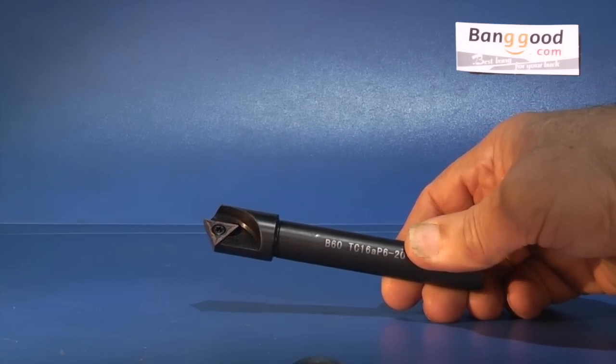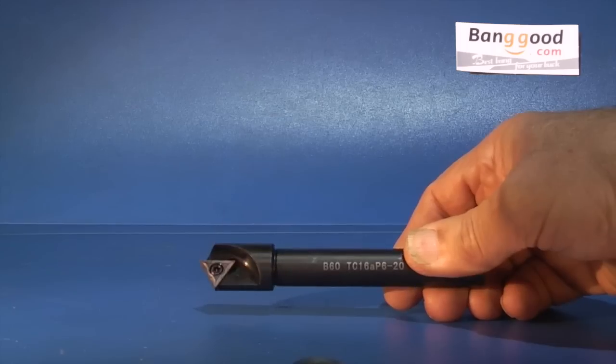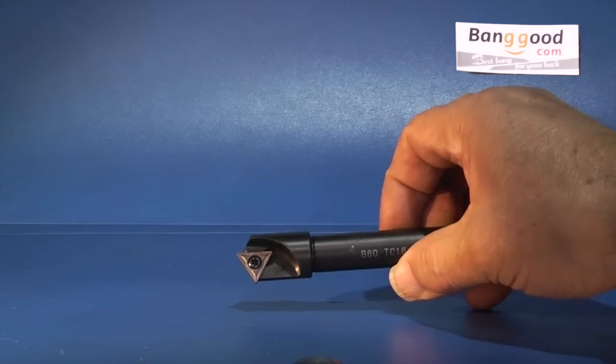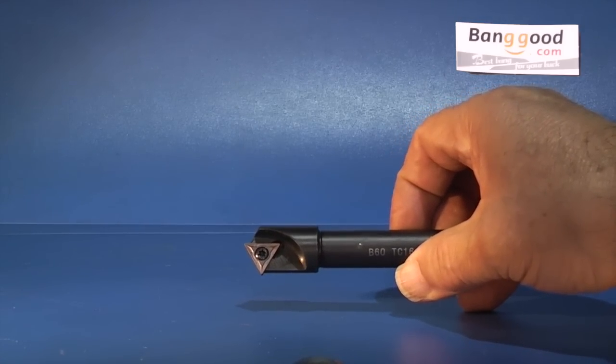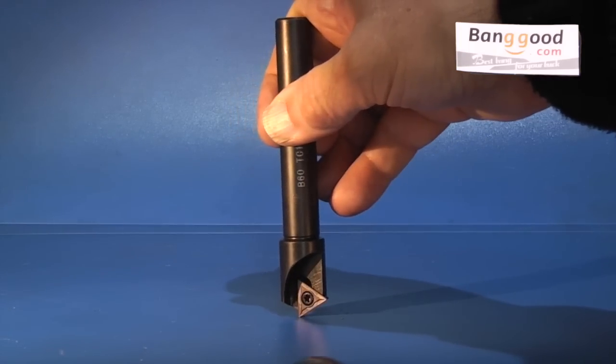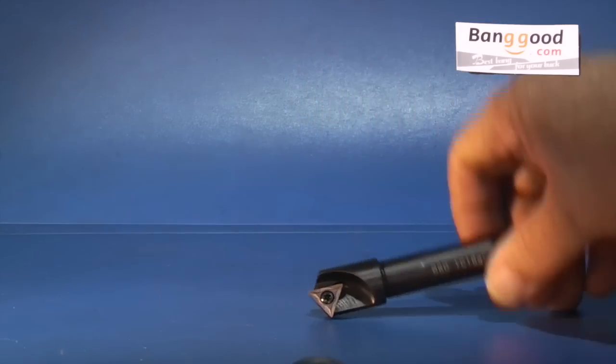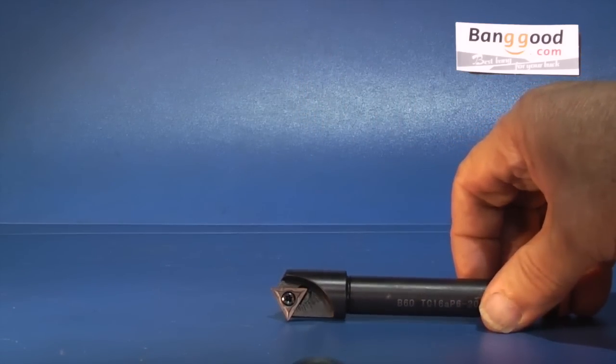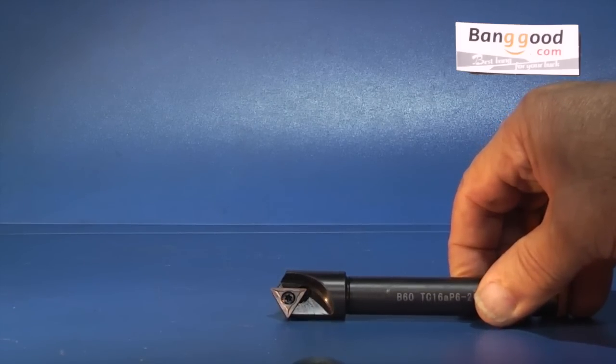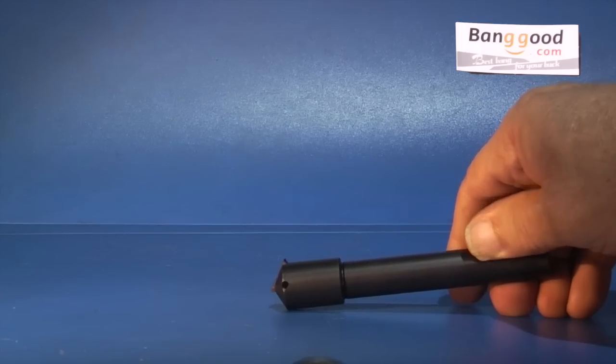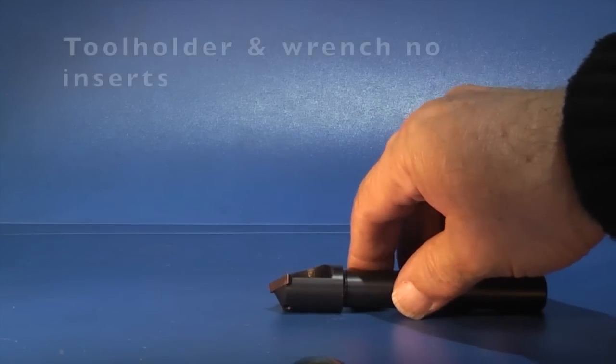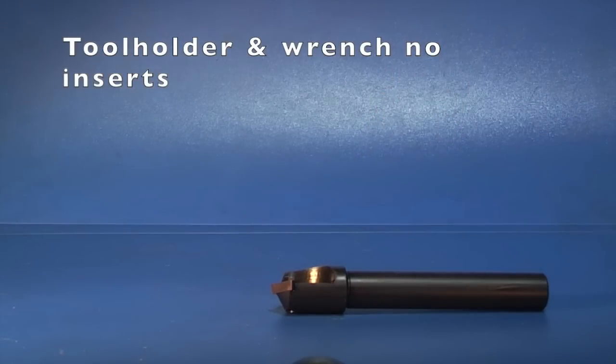And the last tool for today is this one. It's a 60 degree angle tip and the diameter is 16mm. It's used for cutting grooves, chamfers or centering. It doesn't come with any inserts, but I have bought some inserts and you get those in a pack of 10. It comes with the key to tighten the inserts. And I'm going to try this in the lathe to see how well it will cut a chamfer.